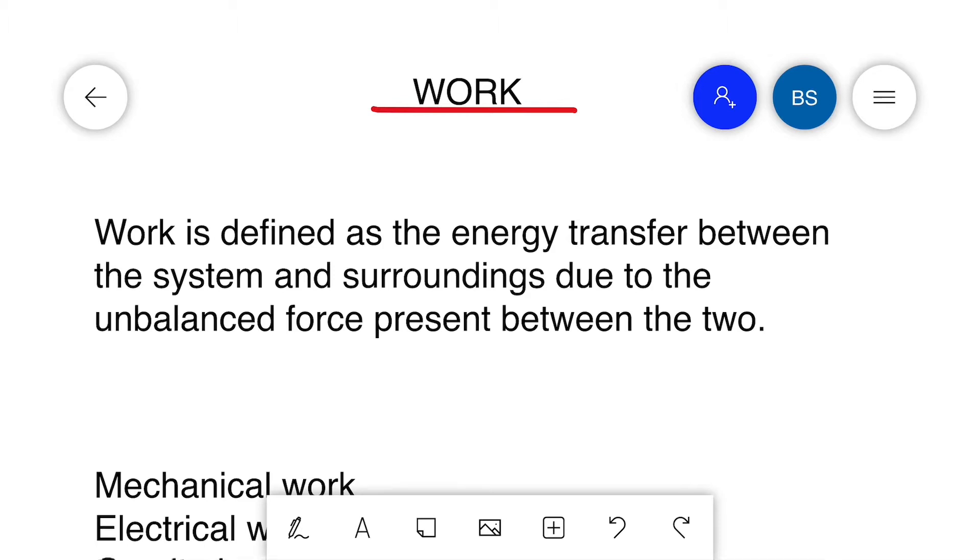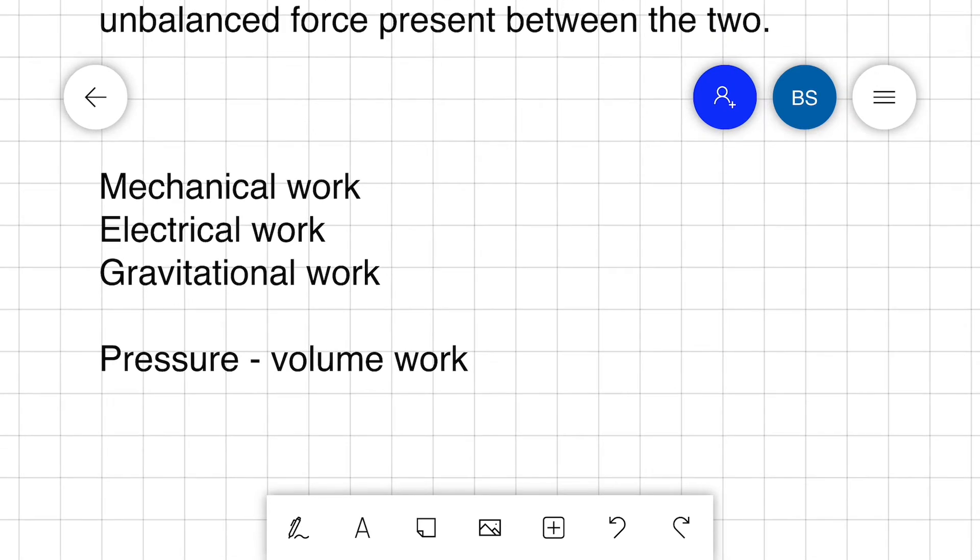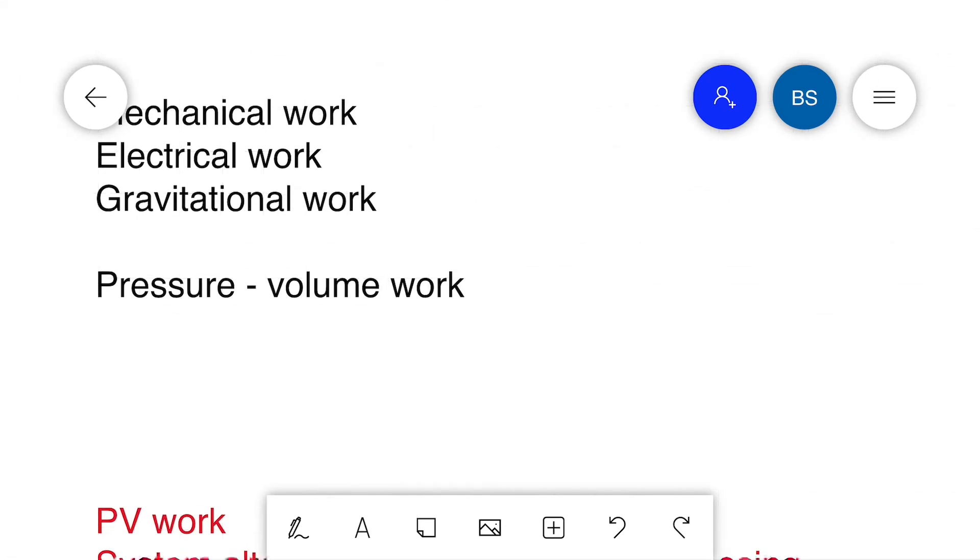We will start this session with the definition of work. Work is defined as the energy transfer between the system and the surroundings due to an unbalanced force present between the system and the surroundings. Work can be of different types: mechanical work, electrical work, gravitational work, or pressure-volume work.